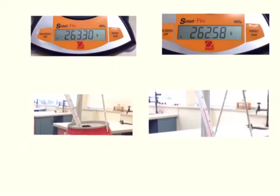In this particular case, our mass of ethanol, or the ethanol burner, went from 263.3 to 262.58. So we had 0.72 grams of ethanol.